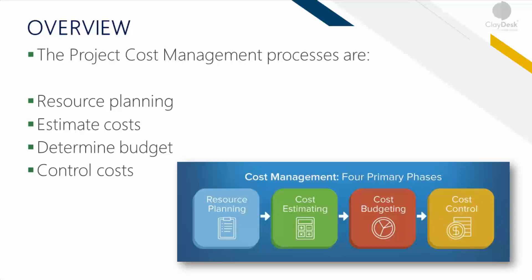The project cost management processes are: first, planning the cost management, which is the process of defining how the project costs will be estimated, budgeted, managed, monitored, and controlled. As a good project manager, you would always like to have some kind of extra budget — or contingency planning — within the cost management as well.